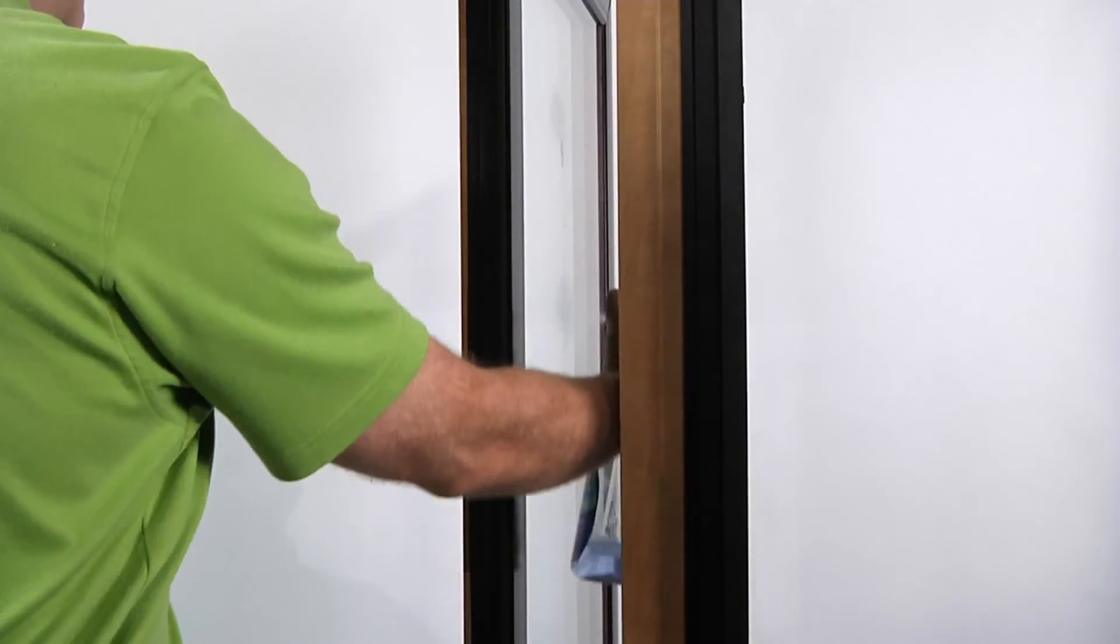Egress hardware is available to maximize net opening when window dimensions are tight for egress code requirements. Standard hardware allows easy and safe cleaning from the inside of your home. Our casement crank handle is reinforced inside the frame to maximize durability and hassle-free operation.